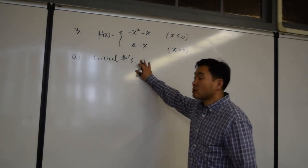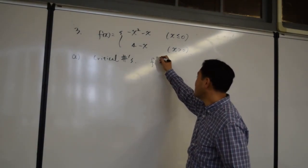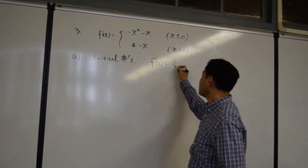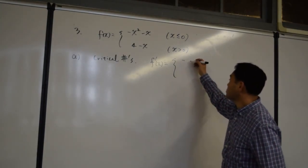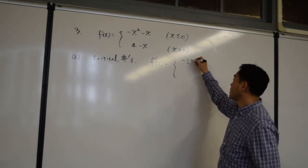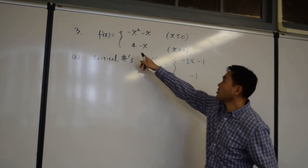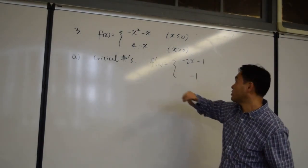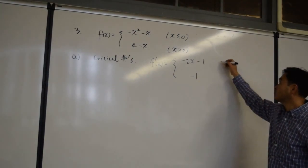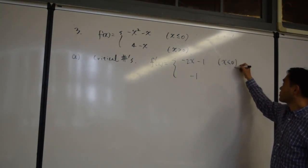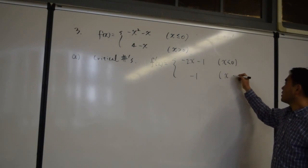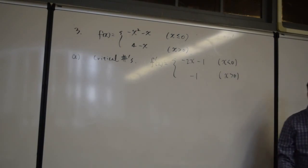So in order to find the critical numbers, you have to differentiate it, which will give you negative 2x minus 1. If you differentiate 4 to zero, if you differentiate negative x, it gives you negative 1.